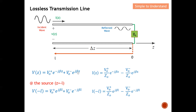For this voltage term, substituting z equals minus l, the negative signs cancel and I get the e^(jβl) terms. For the current at that point, similarly substituting z equals minus l: the first term becomes positive with l, and the second term becomes negative with l. This gives the complete expression for current at that particular point on the transmission line.